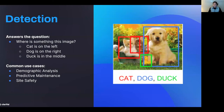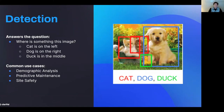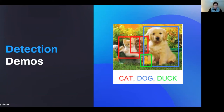Named entity recognition starts to get into what feels more like detection. Detection answers the question of where something is in an input — in this case, an image. On the right side you'll see a picture of a dog, a couple of kittens, and a duck. Detection is not only able to tell you what is in the image, but also where in the image it is. For example, the cat is on the left, the dog is on the right, and there's a dog in the middle. These are commonly used for demographic analysis, predictive maintenance, and site safety.